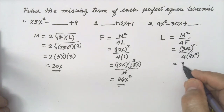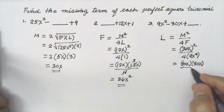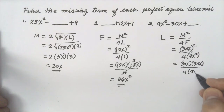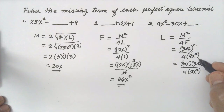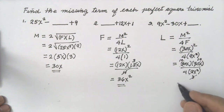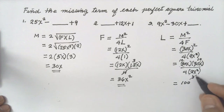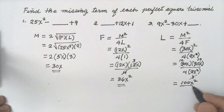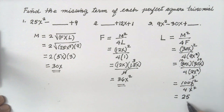Write 30x times 30x over 4 times 9x². Cancel 9 and 30 by 3: 9 becomes 3, and 30 becomes 10, and the other 30 becomes 10 as well. Multiply: 10 times 10 is 100, and x times x is x², over 4x². Cancel x², then divide 100 by 4, which gives 25. So 25 is the missing last term.